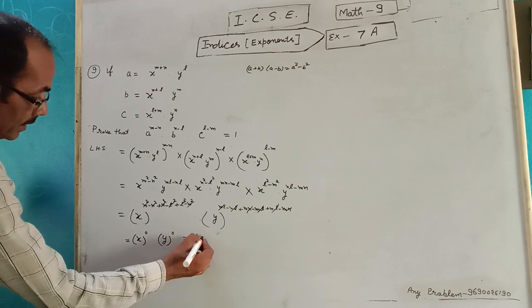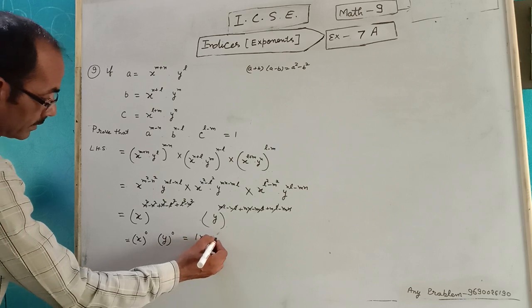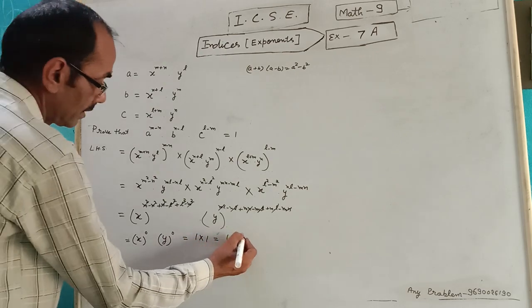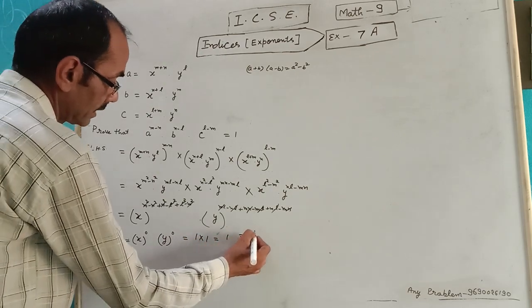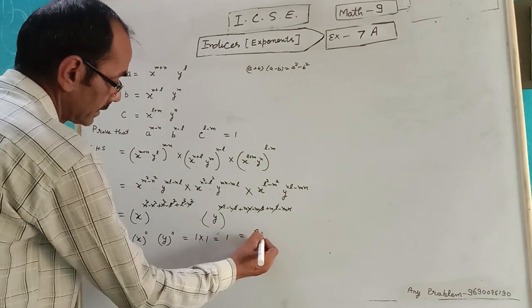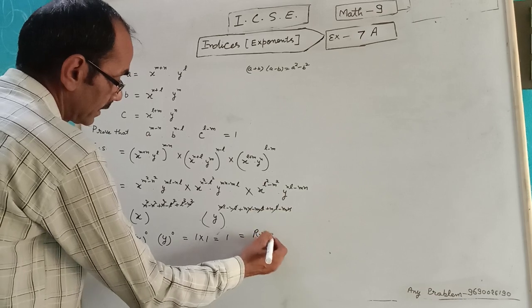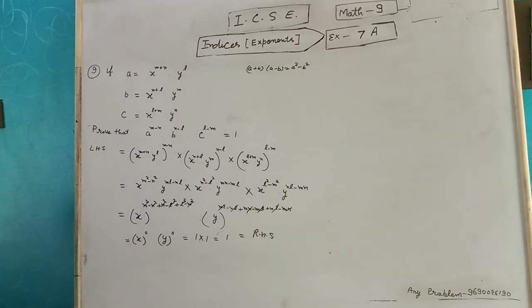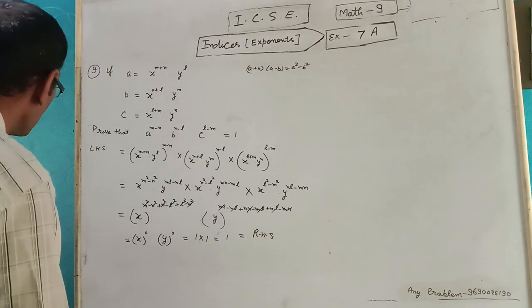Both x^0 and y^0 have value 1. Multiplied together: 1 × 1 = 1, which equals the right hand side. Question number 9 is complete.